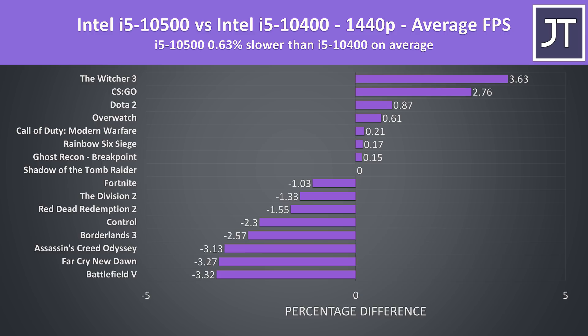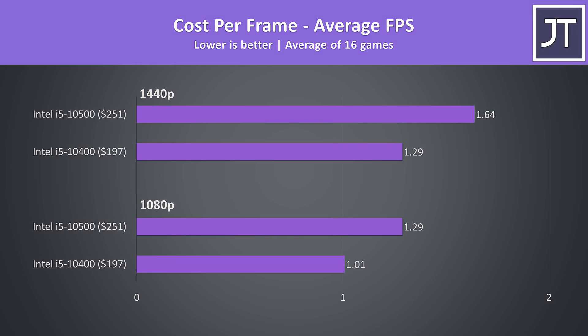At the end of the day the results are similar and still only going one way or the other by 3%. When we factor in prices and look at the dollar-per-frame results, the i5-10400 is of course offering better value. The performance was near identical, but the 10400 currently costs more than $50 less than the 10500. Basically, the 10500 does not seem worth getting if you're gaming — save the money and go for the 10400 instead.